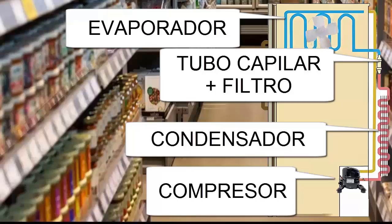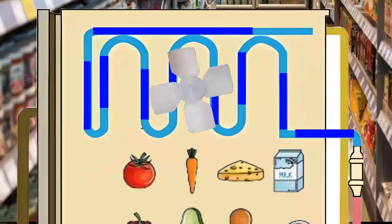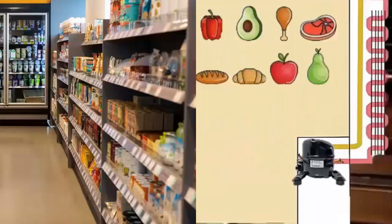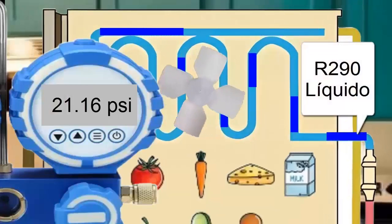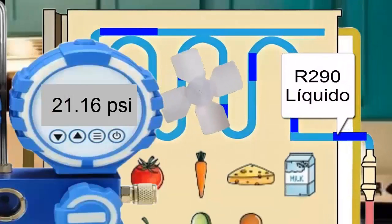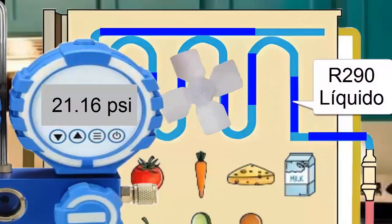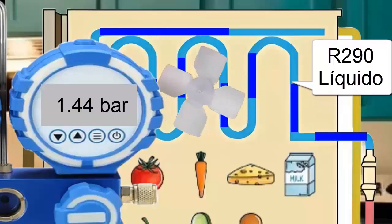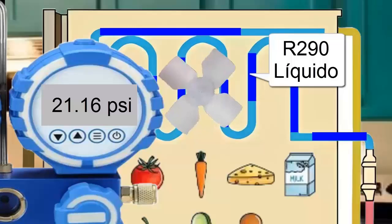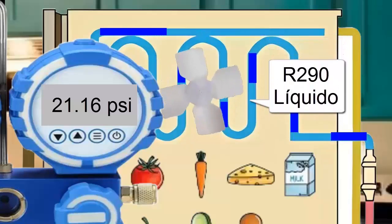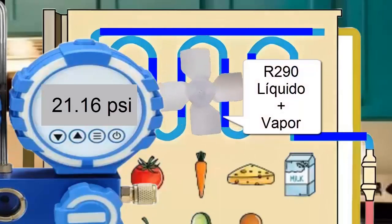On screen, we observe the cooling circuit of the freezer, which operates with R290 refrigerant. The R290 refrigerant enters the evaporator in a liquid state at a pressure of 21 pounds per square inch. The equivalent value of this evaporator pressure in bars is 1.44 bar. With this pressure, the R290 in the evaporator reaches a temperature of minus 20 degrees Celsius.